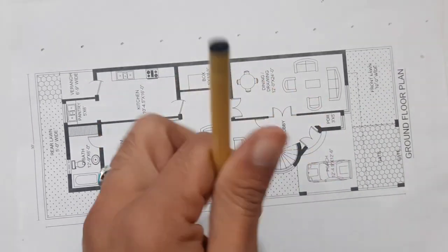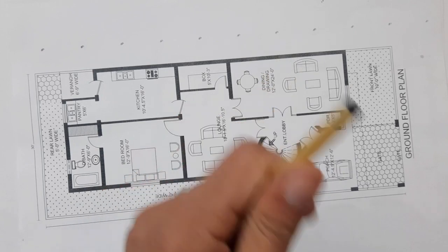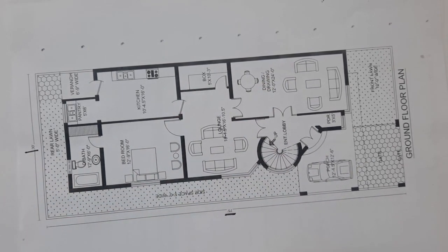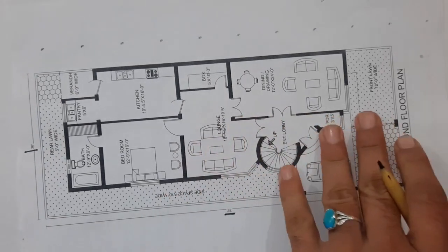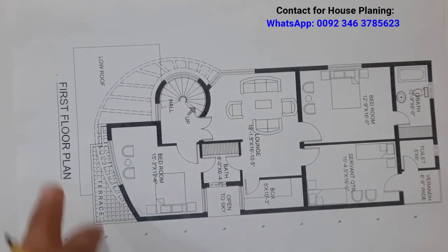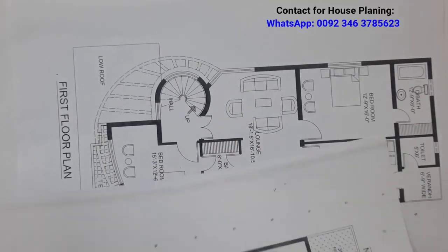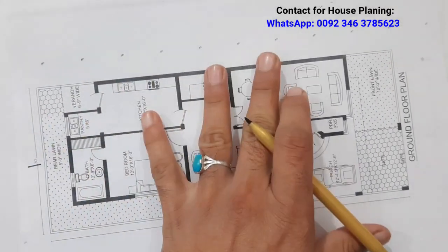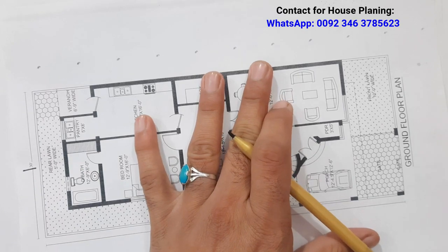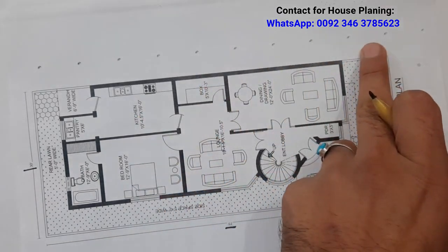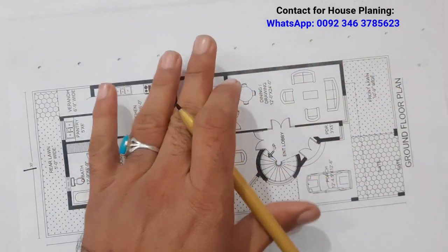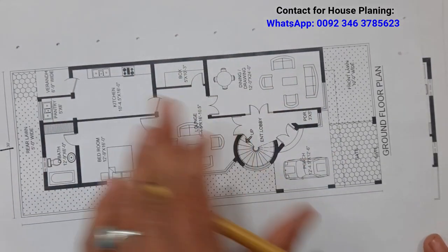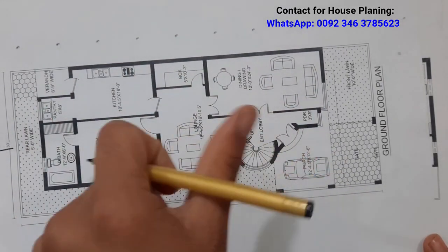Assalamu Alaikum beautiful people. House planning in the dimensions of 30 by 75 feet — this is the ground floor plan, and next you can see the first floor plan. If you need house planning, structural design, or 3D animation for any type of building, you can contact me on this WhatsApp number, but this is a paid service, not free. Let's get started — if this video is helpful, don't forget to like.